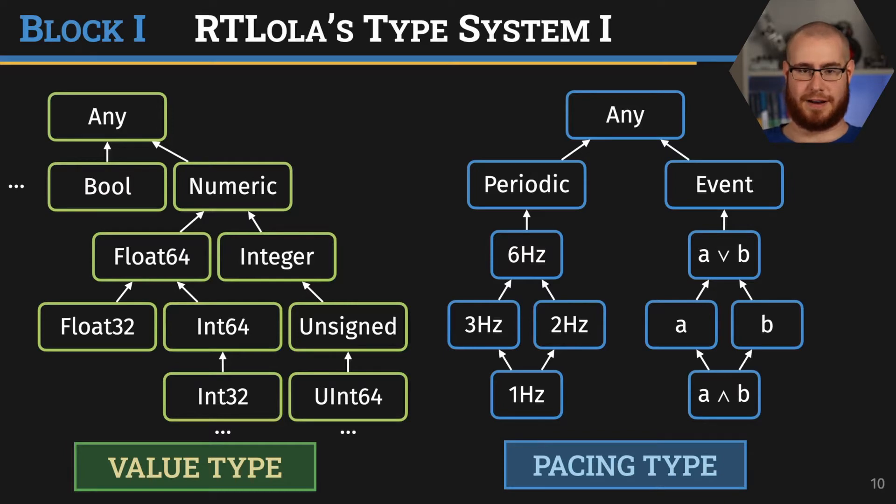Pacing types, however, are far less common in programming languages. RTLola pacing types come in two different shapes: either periodic or event-based. Periodic types are pretty easy to understand. If a stream has the periodic type 1 Hz, we only compute it once per second. If it has 6 Hz, we compute it 6 times per second. The number of potential periodic types for a specification is bounded because there are a couple of periods annotated, and the remaining potential periods are just combinations of these. Periodic types are only concerned with real time and are completely independent of events.